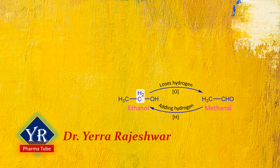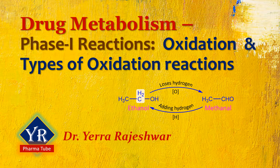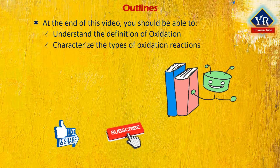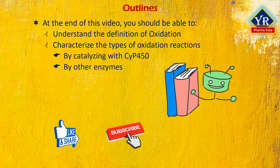In the previous video, we learnt the classification of drug metabolism. If you did not watch the video, hit the i button on the top right of this video to watch it. In this lecture, we shall try to understand the first type of phase 1 reactions, that is, the oxidation and the various types of oxidation reactions. At the end of this lesson, you will be able to understand the definition of oxidation with some examples, and to characterize the types of oxidation reactions, whether the oxidation reaction is catalyzed by the cytochrome P450 enzyme or by other specific enzymes.